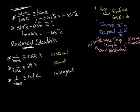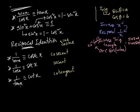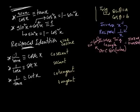Tan comes from sine divided by cos. The reciprocal of tan x is identical to cot x. The full versions are: sine, cosine, tangent, cosecant, secant, and cotangent. These are interchangeable reciprocals: 1 by sine x is cosec x, 1 by cosec x is sine x, 1 by cos x is sec x, 1 by sec x is cos x, 1 by tan x is cot x, and 1 by cot x is tan x.